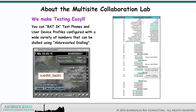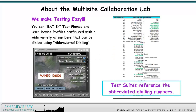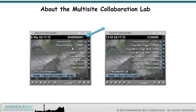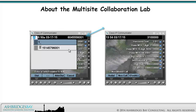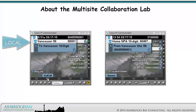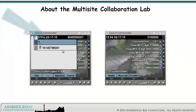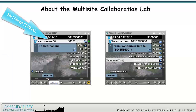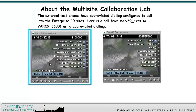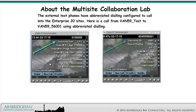We make testing easy. You can log in test phones and use your device profiles configured with a wide variety of numbers that can be dialed using abbreviated dialing. Test suites reference the abbreviated dialing numbers. Here are calls from Vancouver 59 56001 to a local 10-digit and international number using abbreviated dialing. The external test phones have abbreviated dialing configured to call into the Enterprise 20 sites.